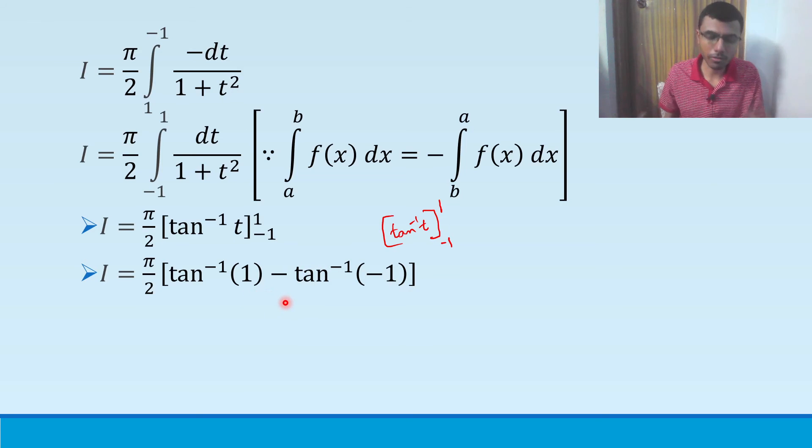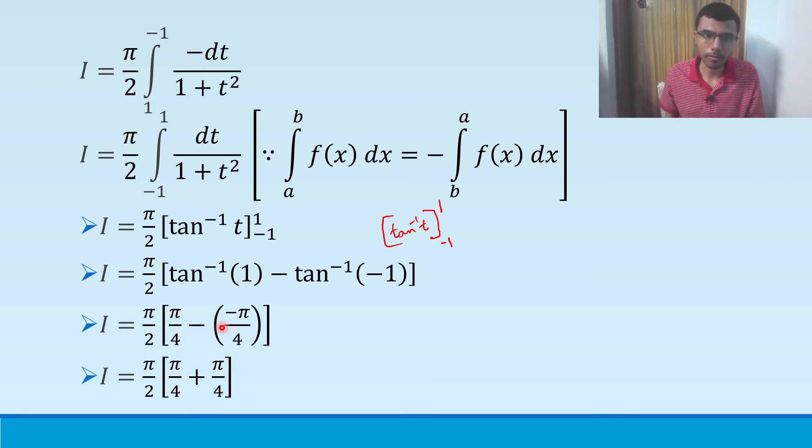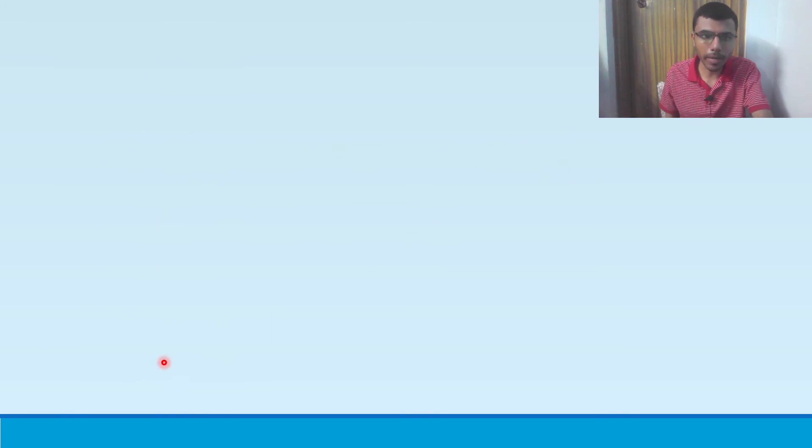What is tan inverse 1? In case you forgot inverse trigonometry, it is pi by 4. And tan inverse minus 1 is minus pi by 4. Pi by 4 minus of minus pi by 4. So pi by 4 plus pi by 4 I get. Minus into minus. Pi by 4 plus pi by 4 is pi by 2, because 1 by 4 plus 1 by 4 is half. So I will be nothing but pi by 2 into pi by 2 which is nothing but pi squared by 4.